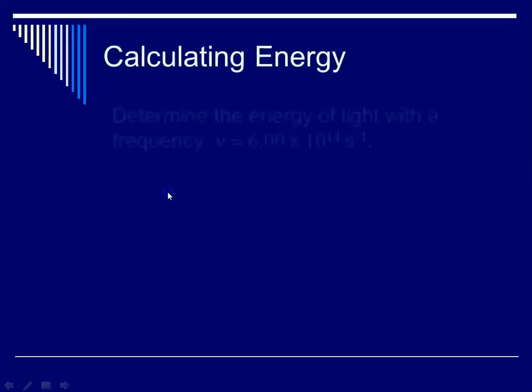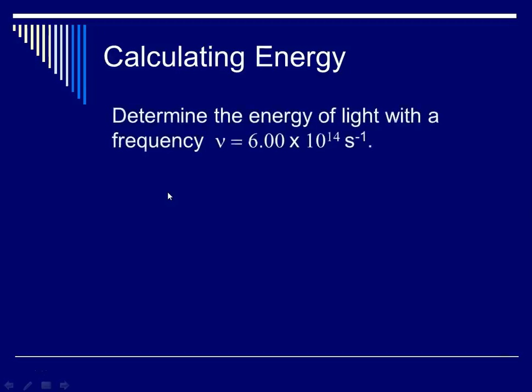So let's try a second problem, and this one is from a worksheet. It's asking us to determine the energy of light that has a frequency of 6 times 10 to the 14th seconds to the minus 1. And this is that frequency that we just calculated a moment ago.